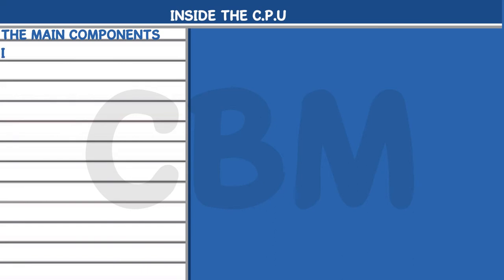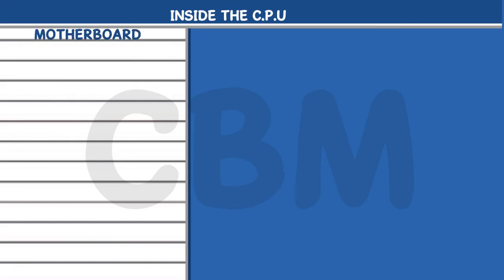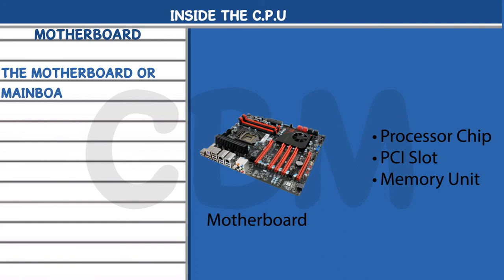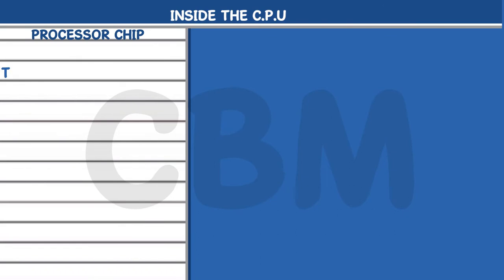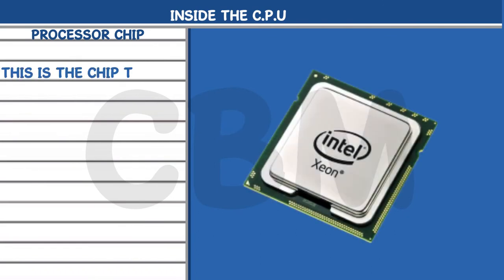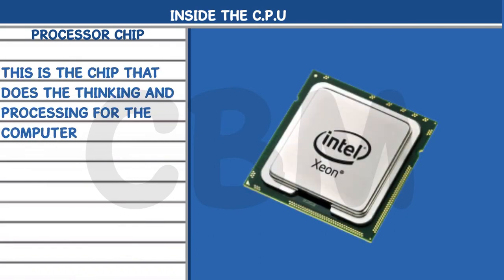The main components inside the CPU are as follows. Motherboard: The motherboard, or mainboard, is the backbone of the computer. The motherboard consists of the processor chip, PCI slots, and memory unit. The processor chip is the chip that does the thinking and processing for the computer.